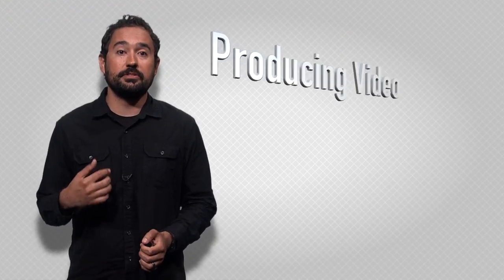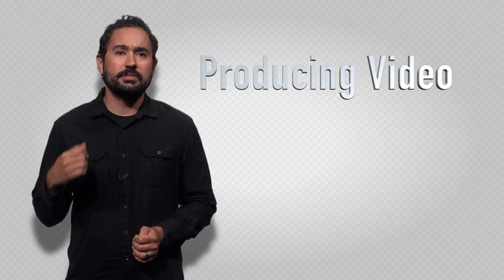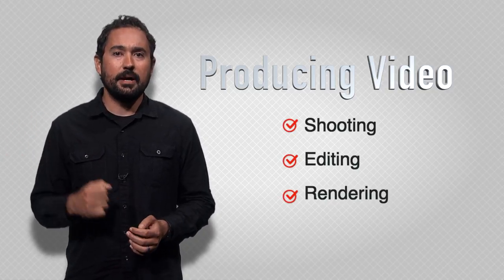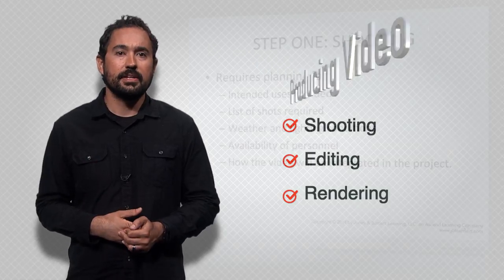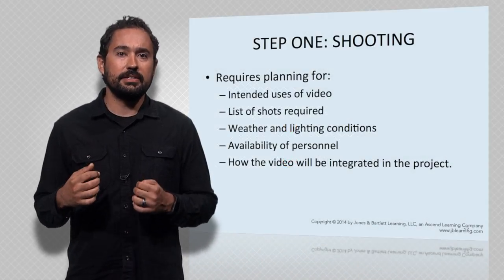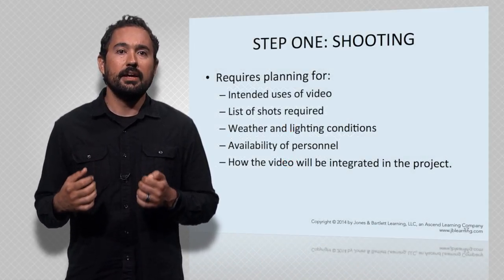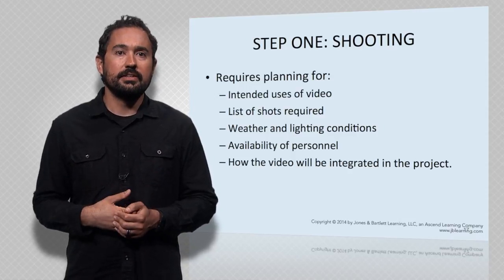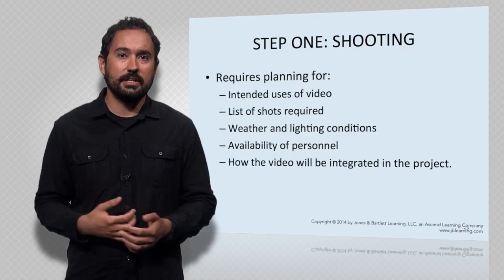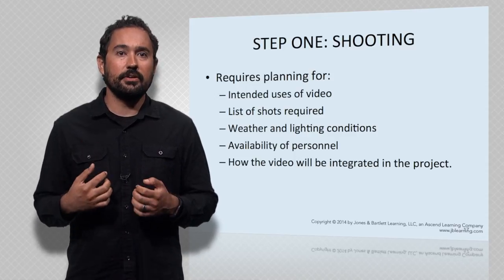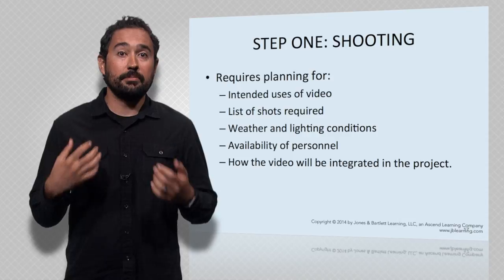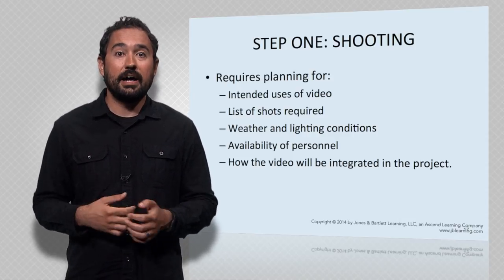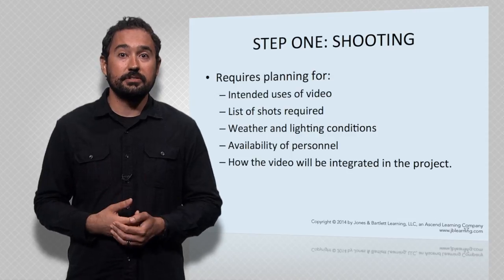Now let's discuss how to produce original digital video. It all comes down to three steps: shooting, editing, and rendering. In step one, you shoot the needed video. This step requires planning, and many times a script has been created and the intended use of the video is defined by this. Also, the list of shots is generated based on the script. Next, you have to consider weather, lighting conditions, availability of personnel — your team and talent — and finally, how the video will be integrated into your project workflow.